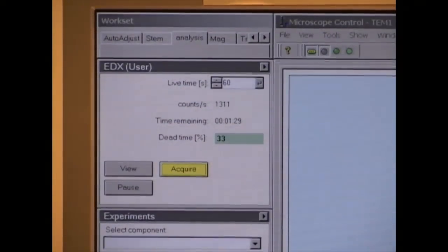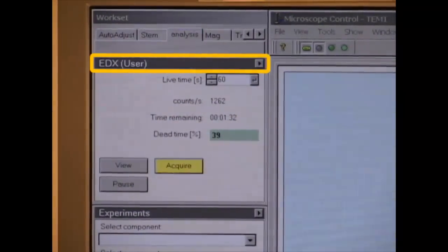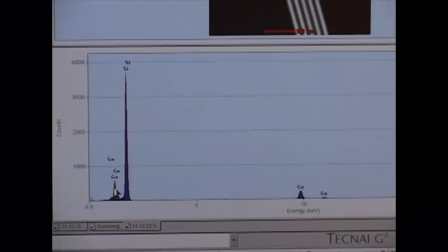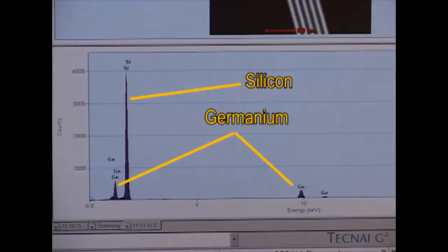Under Microscope Control, Analysis, EDX User, click Acquire. The energy spectrum reveals peaks for silicon and germanium.